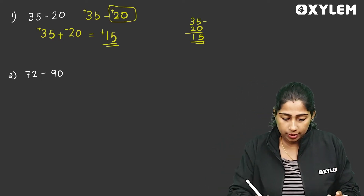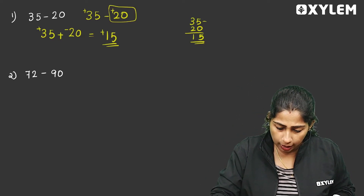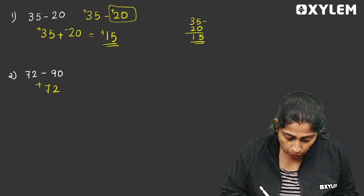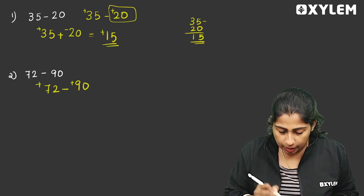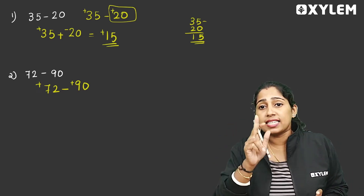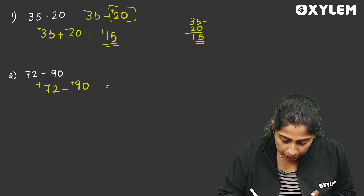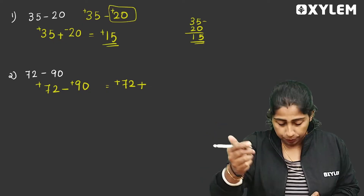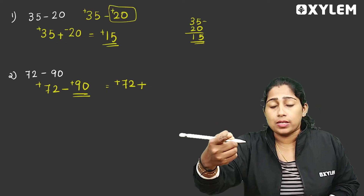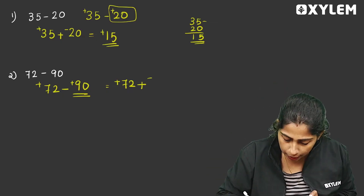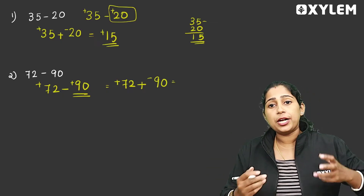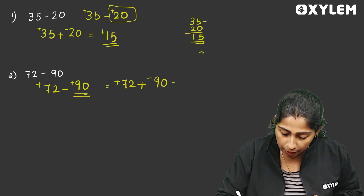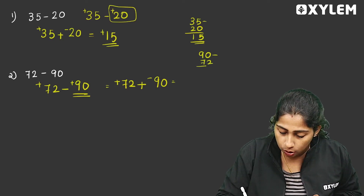Next question: 72 minus 90. That is plus 72 minus plus 90. This is our question — plus 72 minus plus 90. If we do subtraction, we will add plus 72 plus the additive inverse of plus 90. Plus 90's additive inverse is minus 90.